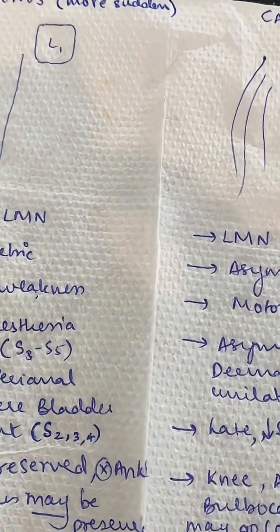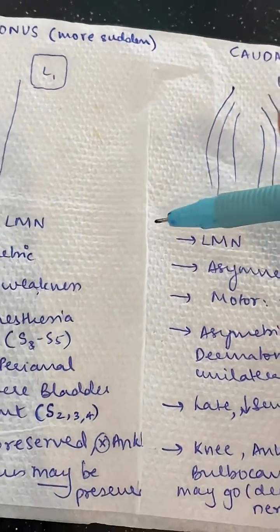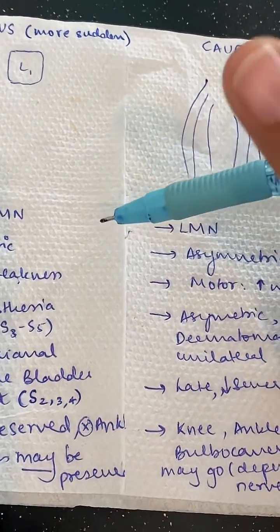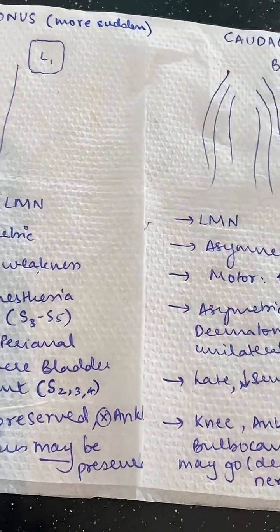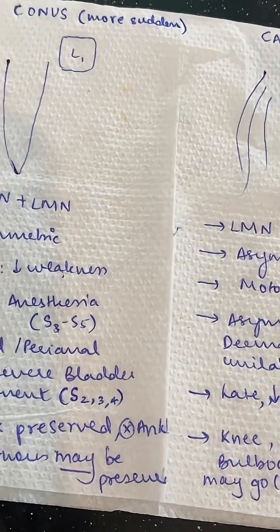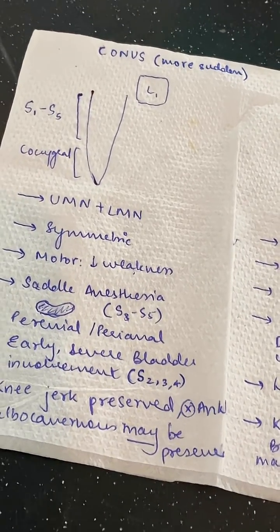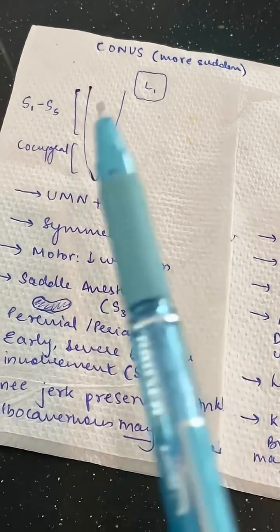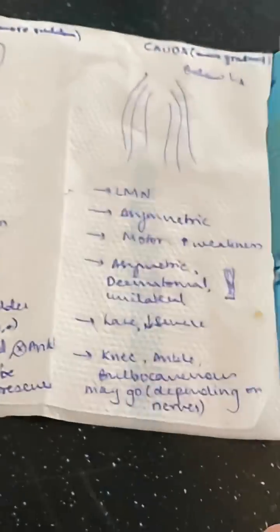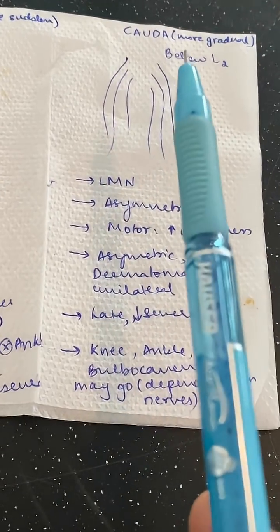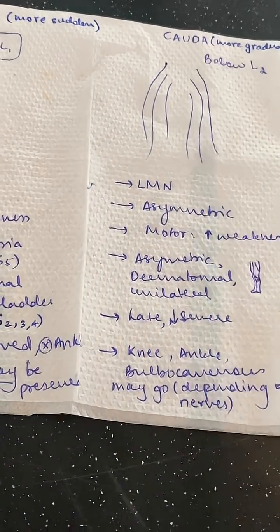The causes for any dysfunction are almost the same: trauma, tumours, spinal canal stenosis, etc. As Dirty Medicine would quote it, conus refers to a transverse myelitis sort of situation and cauda refers to a radiculopathy kind of situation.